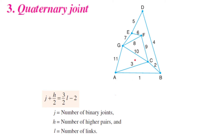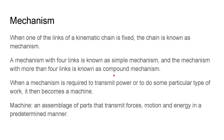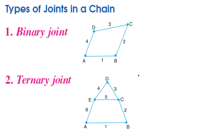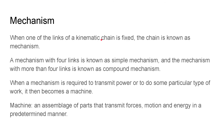Now let's see the difference between mechanism and machine. When one link of a kinematic chain is fixed, the chain is called a mechanism. When all links are free to move it cannot be used as a definite motion machine, but when one link is fixed it becomes a mechanism. A mechanism with four links is known as a simple mechanism.